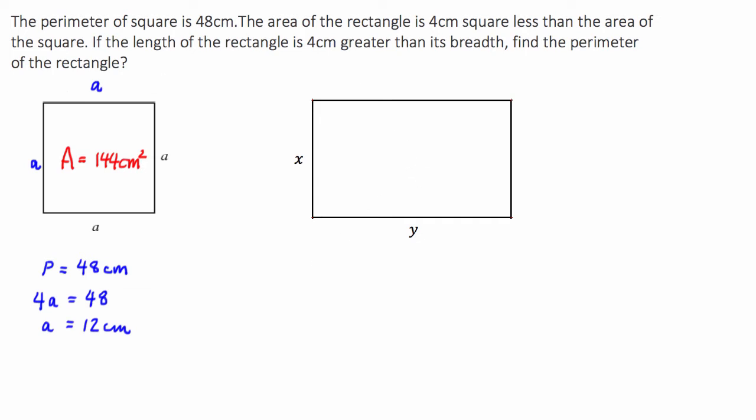So what we know now is the question then says that the area of the rectangle is 4 centimeters squared less than the area of the square. So we can say that the area of the rectangle is equal to 140 centimeters squared because that's 4 centimeters less than that.